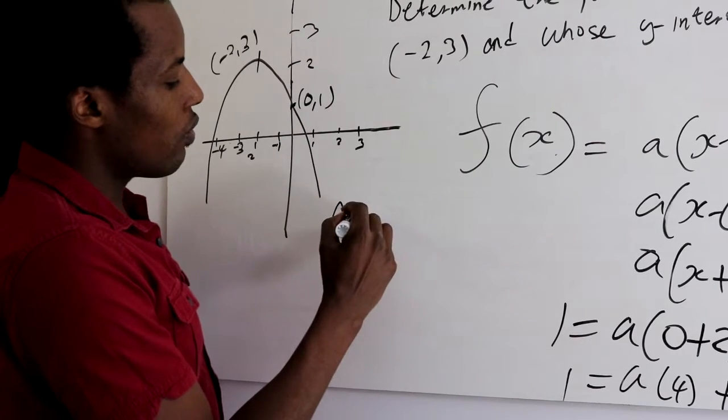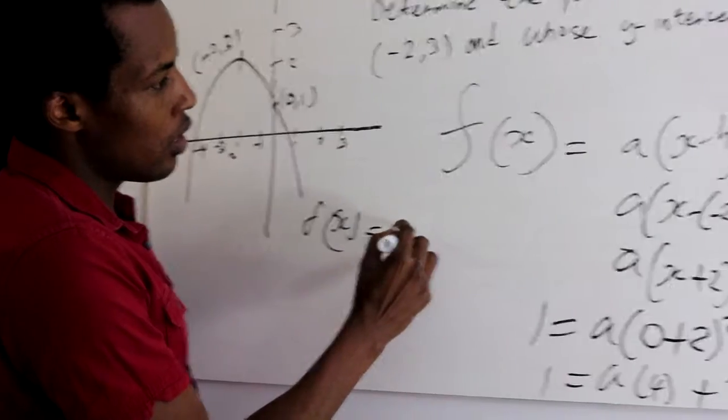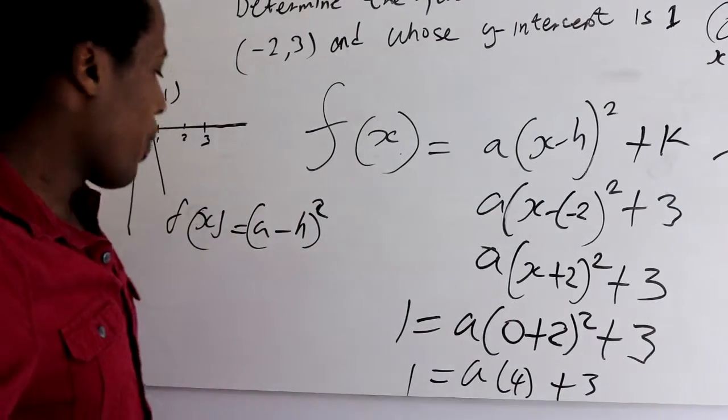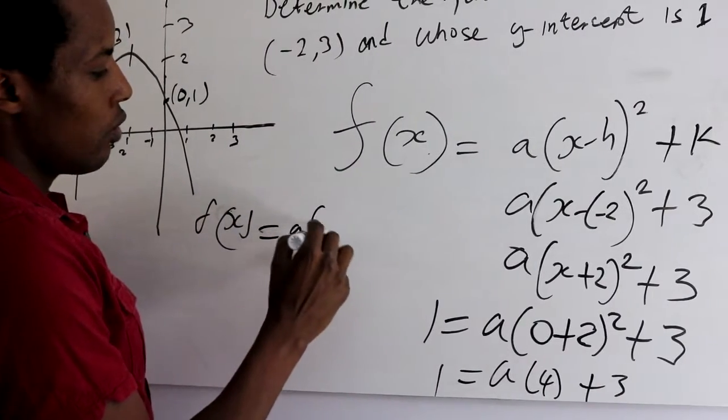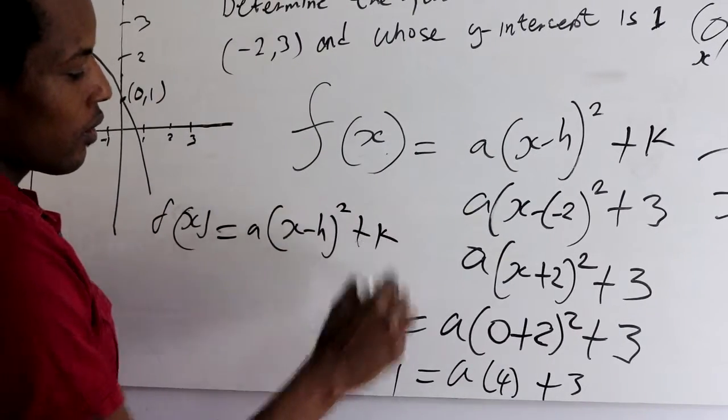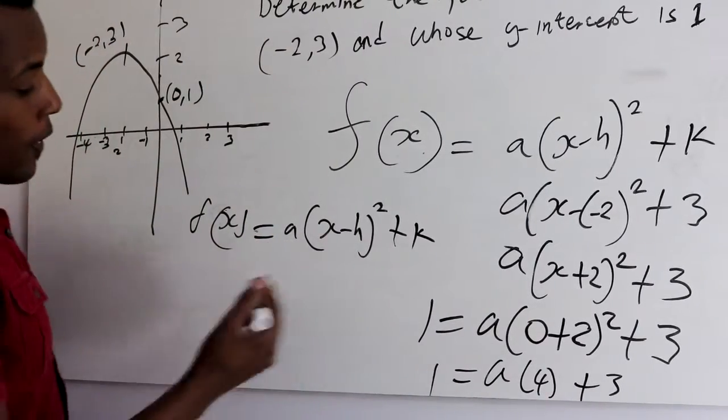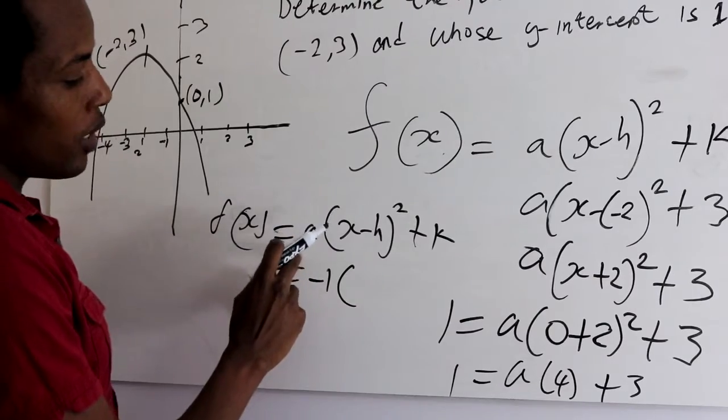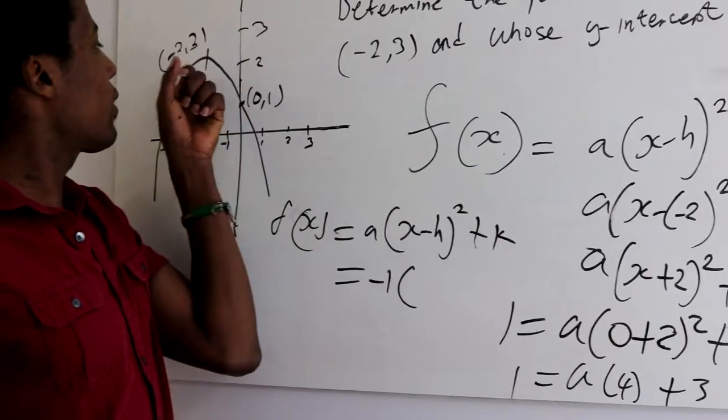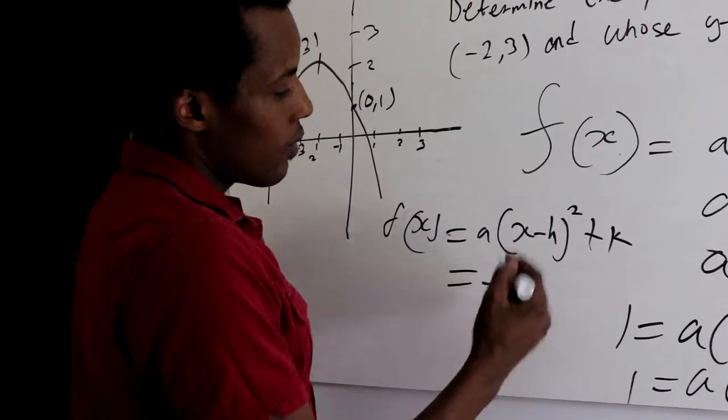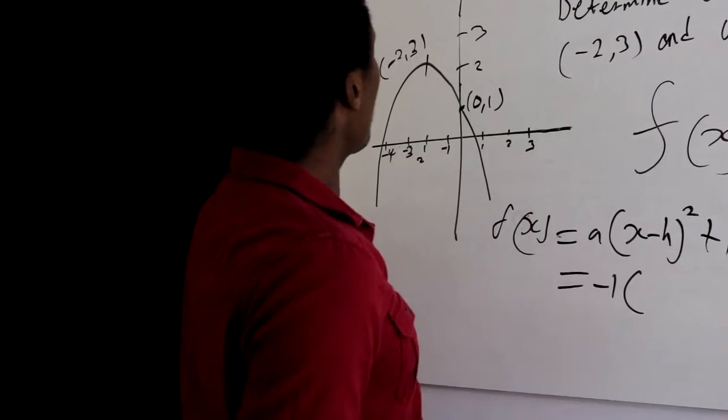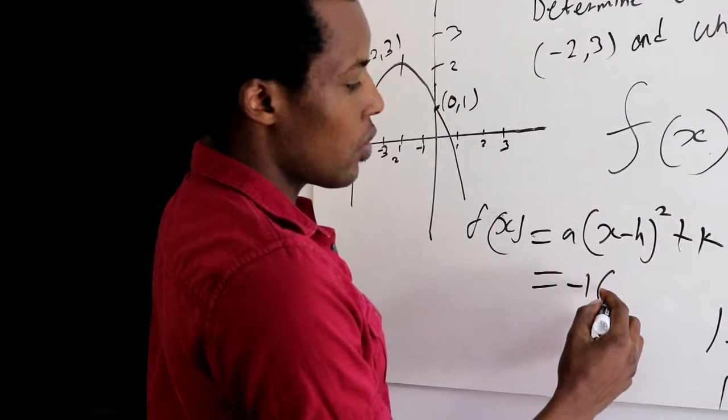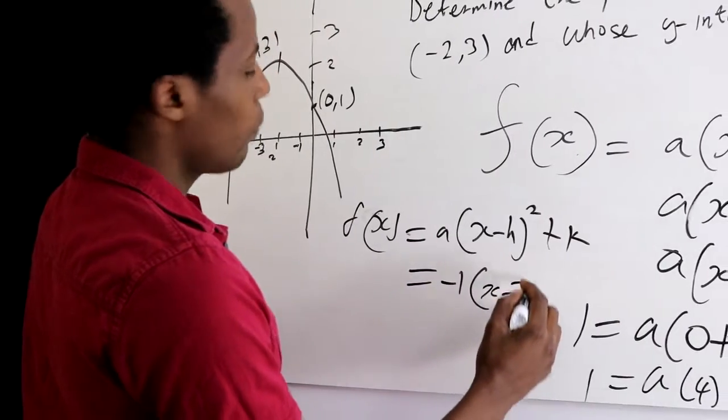So right now we find our value equal to A. So now we try to replace the whole equation. Remember the equation f of x is equal to A into x minus h squared plus k. So now we get a value of A. A is equal to minus 1. So the equation would be minus 1, because remember the value of A was minus 1, and then now we're going to replace all the equation with the value of vertex, which is negative 2, 3. So negative 2, our x value is negative 2, and our y value is 3. So it's going to be x minus minus 2 plus 3.